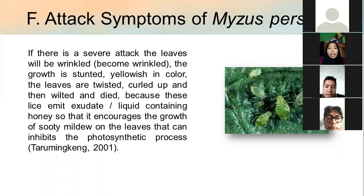Attack symptoms of Myzus persicae: If there is a severe attack, the leaves will become wrinkled, growth is stunted and yellowish in color, the leaves are twisted, discolored, wilted, and die. Additionally, this pest emits exudate — a liquid containing honeydew — that counteracts growth and causes mold on the leaves, which can inhibit the photosynthesis process.